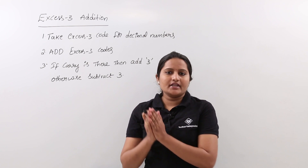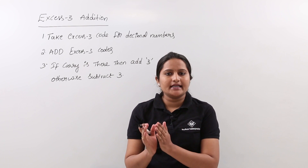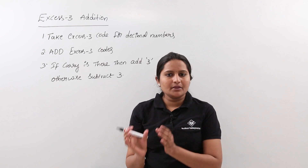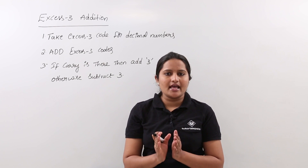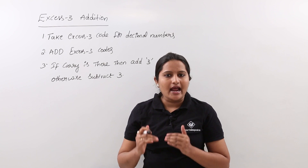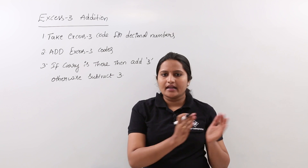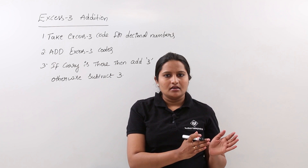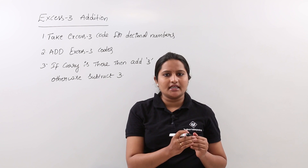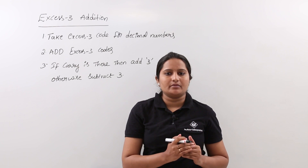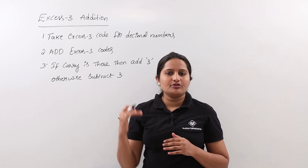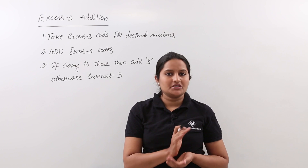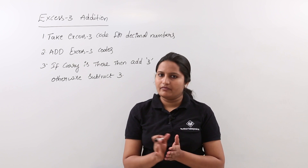For example, after addition you get 2 bits: for 1 bit it generated carry and for the other bit it did not. Whatever bit generated carry is treated as wrong XS3 code, so we add 3 for correction. The next bit not having any carry is treated as right XS3, but even so, in XS3 addition we need to subtract 3 from it. If any bit has carry, add 3; if no carry, subtract 3.